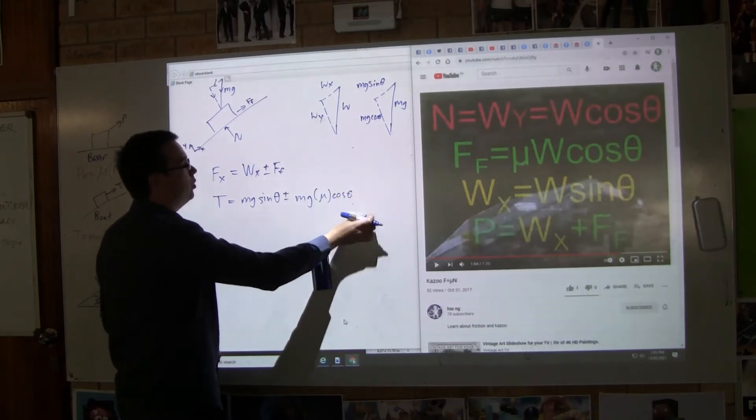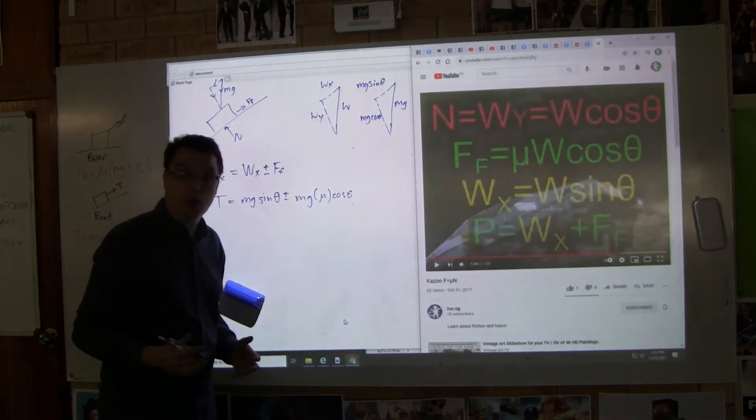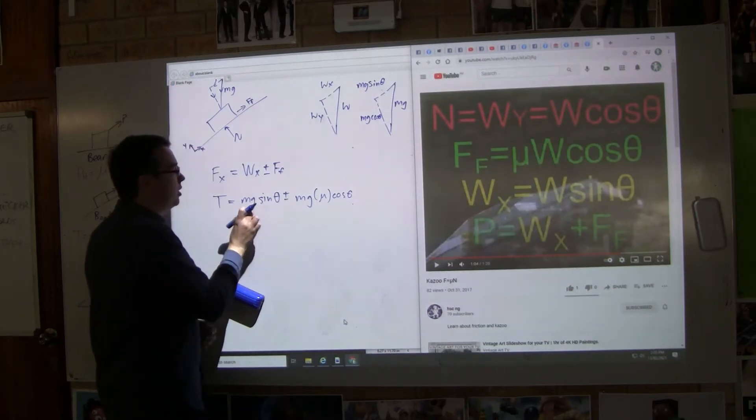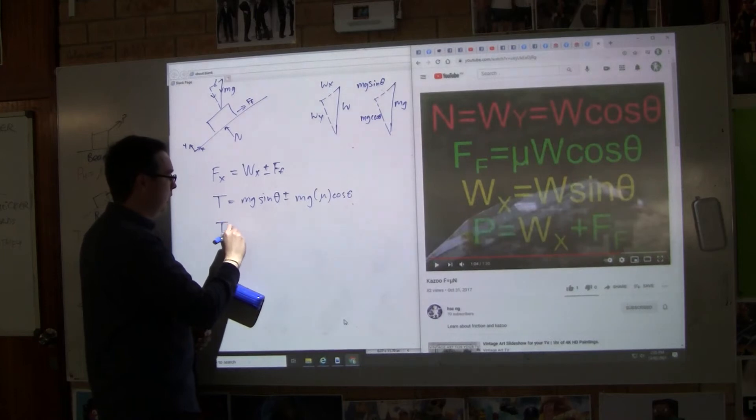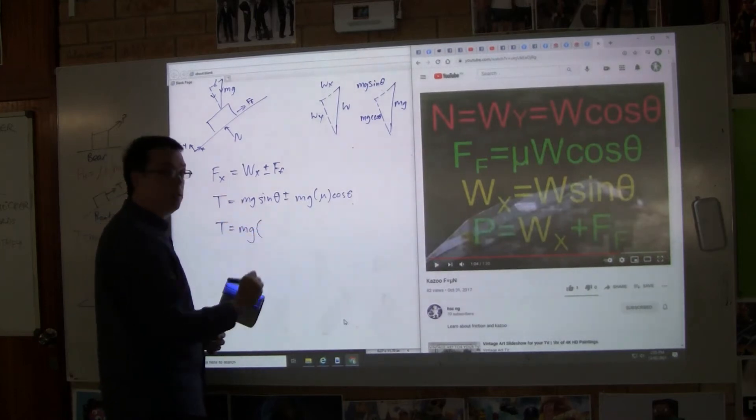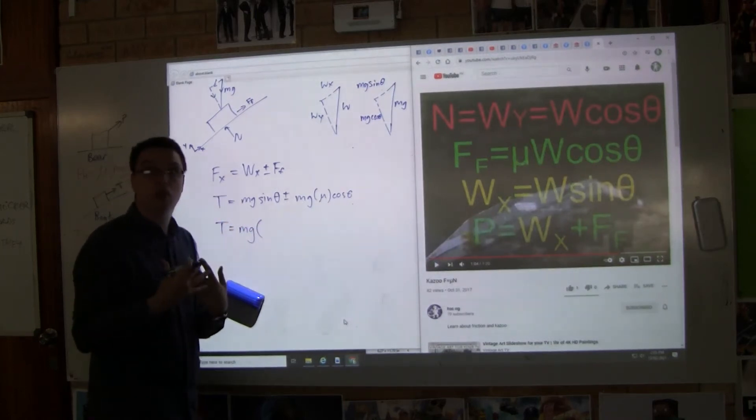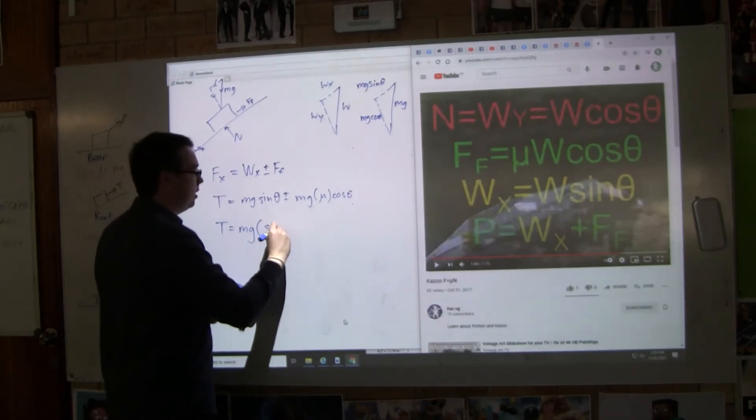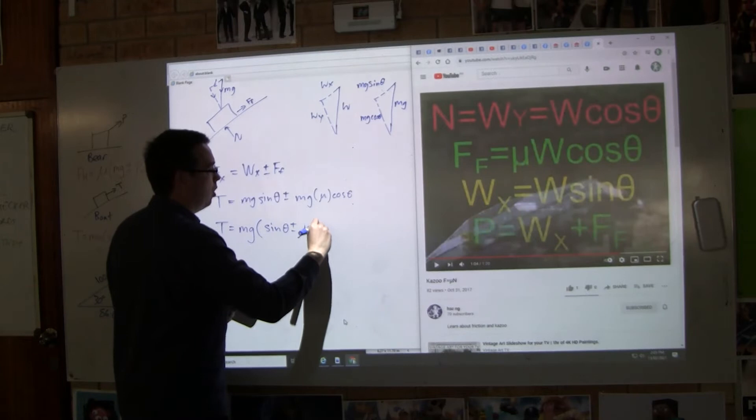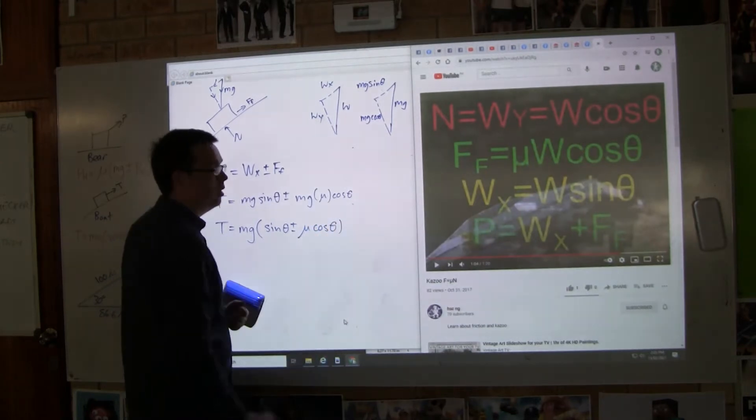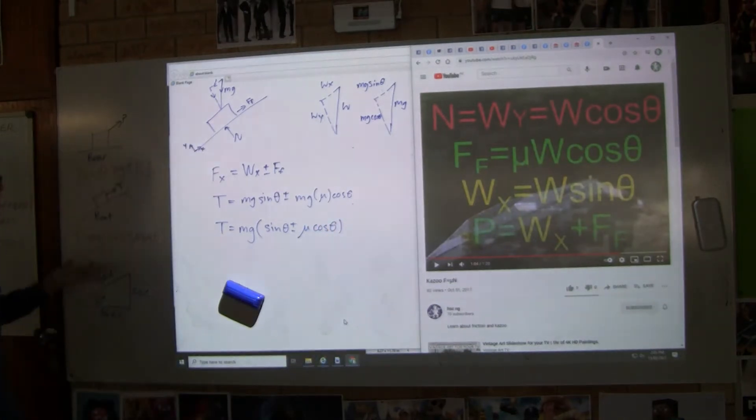Now what we can do is we can factorize. See how there's an mg both times? We can say T equals mg brackets, and we take the mg away both times. So what we get is sine theta plus or minus mu cos theta. And that brings us to the too many guys formula.